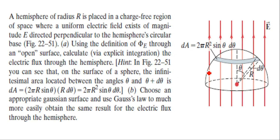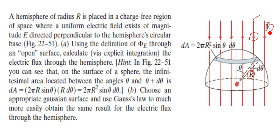In this problem we are given a hemispherical surface of radius R placed in a charge-free region where the electric field is uniform in magnitude as well as direction. Its direction everywhere is vertically upward and its magnitude everywhere is E. We have to find the electric flux through this hemispherical surface.